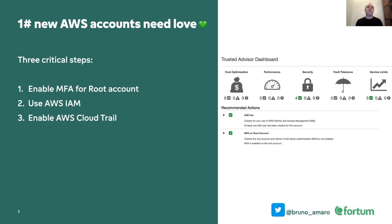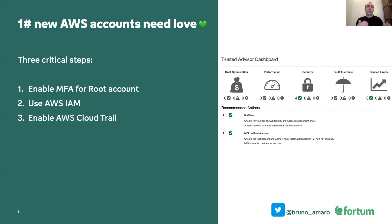The third thing is to enable AWS CloudTrail. CloudTrail can easily be enabled in the account and will basically log any API call that happens within it. When you interact with the AWS console, it issues API calls in the background — to describe your EC2 instances, describe resources, and so on. All of those calls can be automatically logged if you have CloudTrail enabled, giving you an audit trail of who did what and when in your account. These three things take about five minutes to set up, and people often forget.